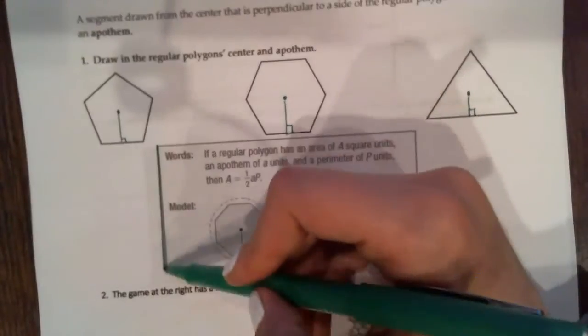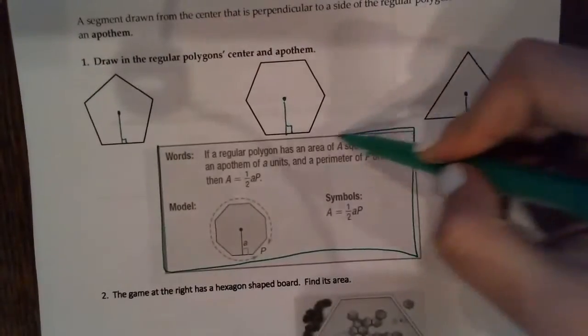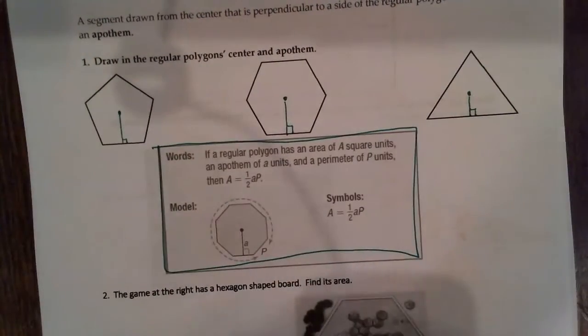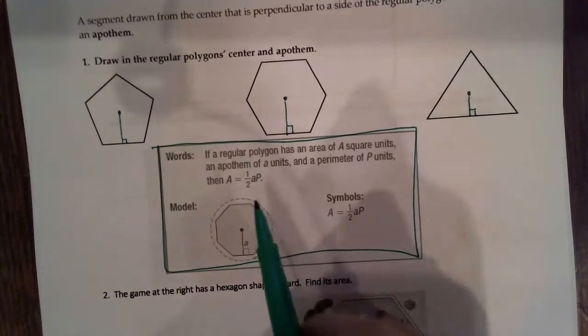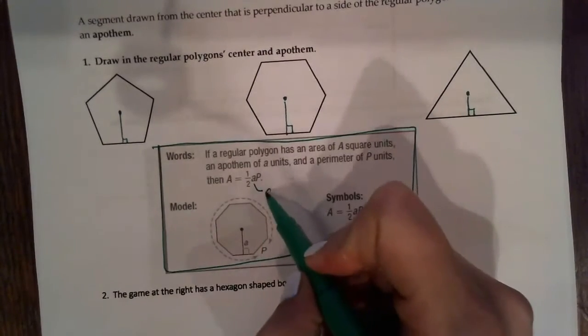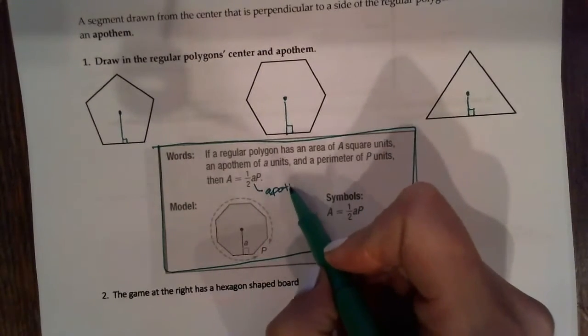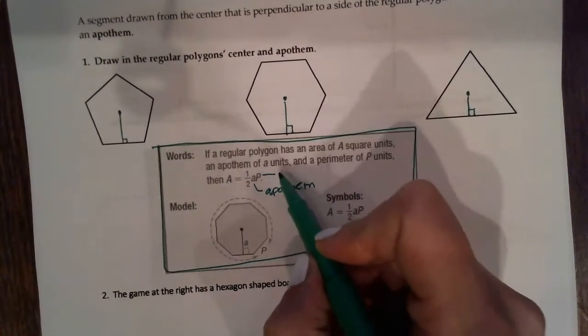So, here we go. If a regular polygon has an area of A square units and apothem of A units and a perimeter of P units, then area equals 1 half AP, which is apothem and perimeter.